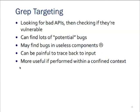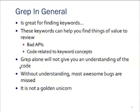Grepping. I don't like to endorse grepping, but it is important to use when auditing, especially under time constraints. Grep can be very handy, but it is not a golden unicorn. It can help you find bad APIs — things like strcpy or malloc — to see if they have any sort of arithmetic. You can find lots of potential bugs, but if you haven't traced your input, these potential bugs are useless or only theoretical. You can also find bugs in components that aren't even accessed or used. It can be painful to trace back to input, and you should use grep within a confined context. It's great for finding keywords to identify certain pieces of code — maybe authentication or password handling — but without a full understanding of the code, you're going to miss most of the awesome bugs.